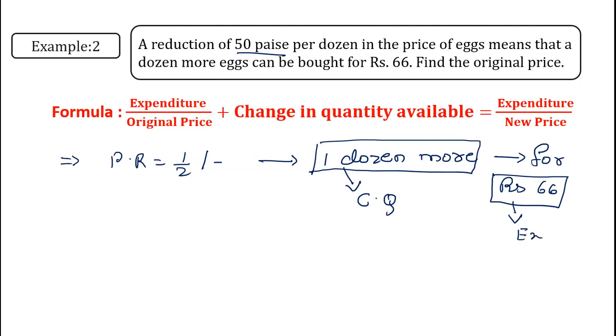Expenditure ki jo value hai, that is equal to 66, and we have to find the original price. Original price I will consider it as x rupees, and new price will become original price minus the price reduced, which is equal to x minus one upon two rupees.